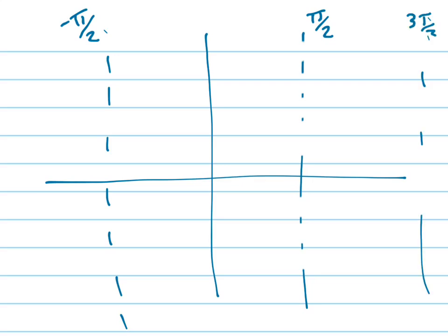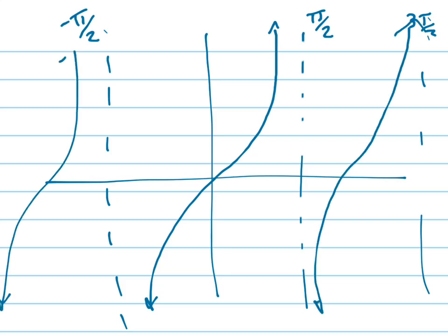So my tangent graph looks like this. There's my tangent graph. And then it does that. And it does that. That's my tangent graph, right?